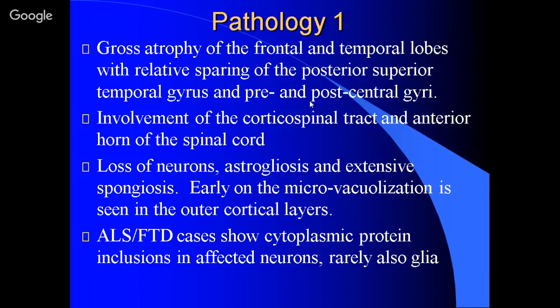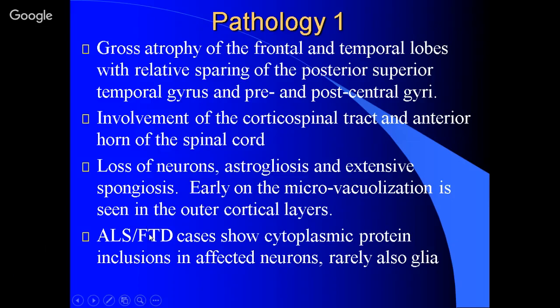The gross pathology: frontotemporal dementia shows atrophy of the frontal and temporal lobes. In ALS you have the corticospinal tract and anterior horn involved. These are on a spectrum. You have loss of neurons, a glial reaction, and spongiosis with vacuolization seen mainly in the outer cortical layers. This is consistent with spread beginning in the cortex, as eye movements aren't involved in ALS, suggesting spread from upper to lower motor neuron. All of these show cytoplasmic inclusions mainly in neurons, hardly ever in glia.